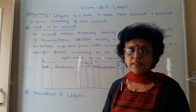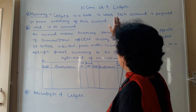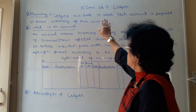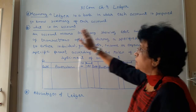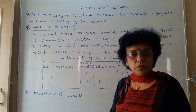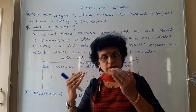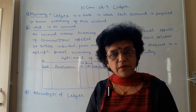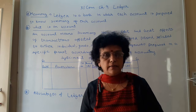So let us try to understand what the Ledger is. Here in chapter number 9, the Ledger is a book in which each account is prepared to know the summary of each account. A trader deals with a number of transactions and in those transactions, a number of individual accounts are there.